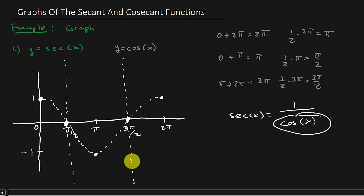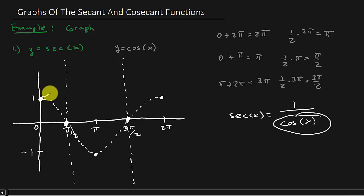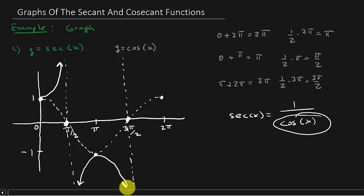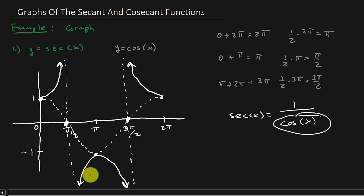Once we have the asymptotes drawn in, we can sketch the graph of secant. It produces what are called U-shaped branches — one on each side of each asymptote. Those solid U-shapes are the graph of secant.